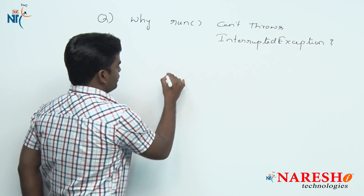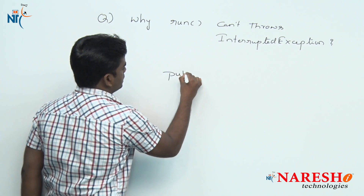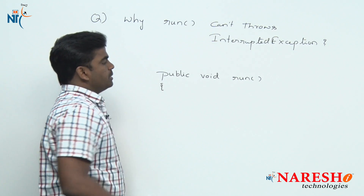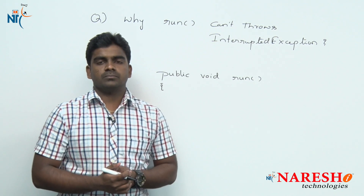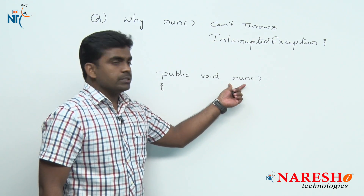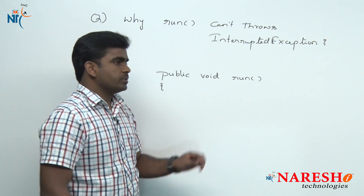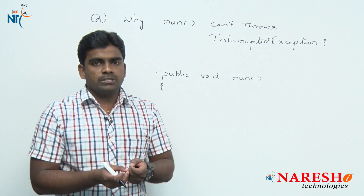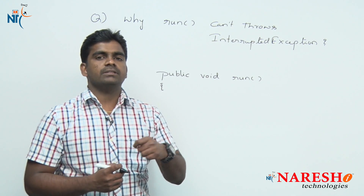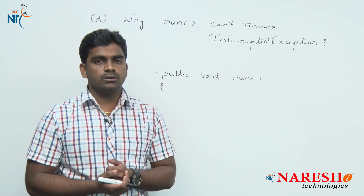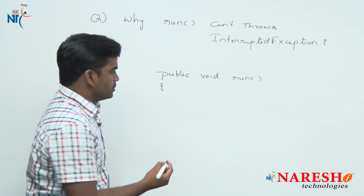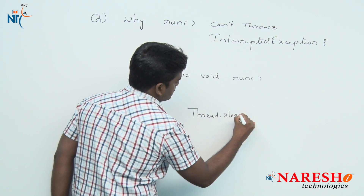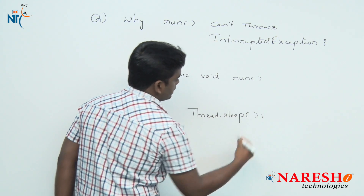For example, whenever we are overriding the run method, the thread logic is placed inside the run method only. Suppose if we want to put that thread into sleep mode, or if you want to join with another thread, the best example is the Thread.sleep() method, because sleep is a static method available in the Thread class.